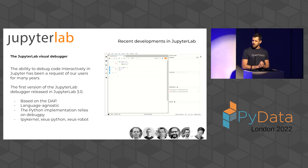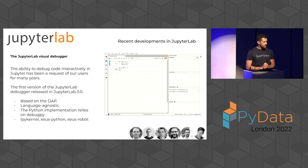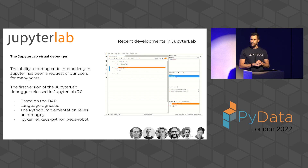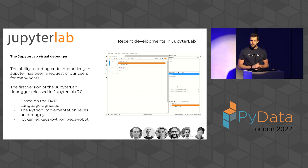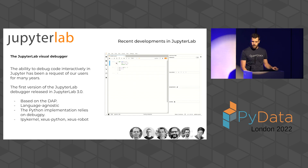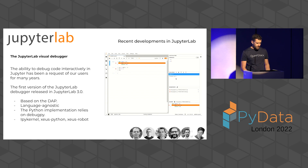One of the most exciting things that happened in the past year in the JupyterLab project is the introduction of the JupyterLab visual debugger. You can now actually debug notebooks and files interactively in JupyterLab as of JupyterLab 3.0. This is still ongoing, with a lot of improvements coming and JupyterLab 4 will be even better. It's based on the DAP from Microsoft, it's language agnostic, and we already have three kernels supporting debugging.